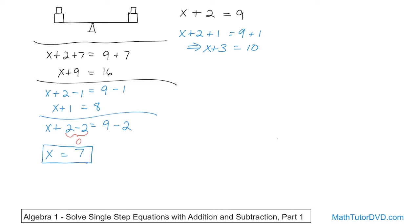The answer is 7, and no matter which version of this equation you look at, the answer is always 7. If you put 7 in x plus 2, you get 9 — checks out. Put 7 in x plus 3, you get 10 — correct. Put 7 in x plus 9, you get 16 — checks out. Put 7 in x plus 1, you get 8. All these equations are exactly the same.